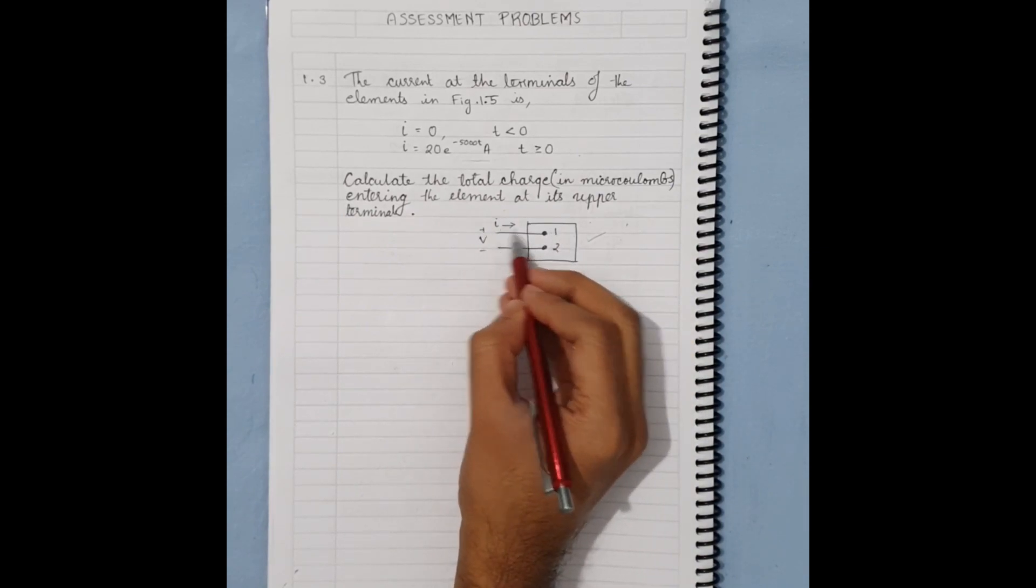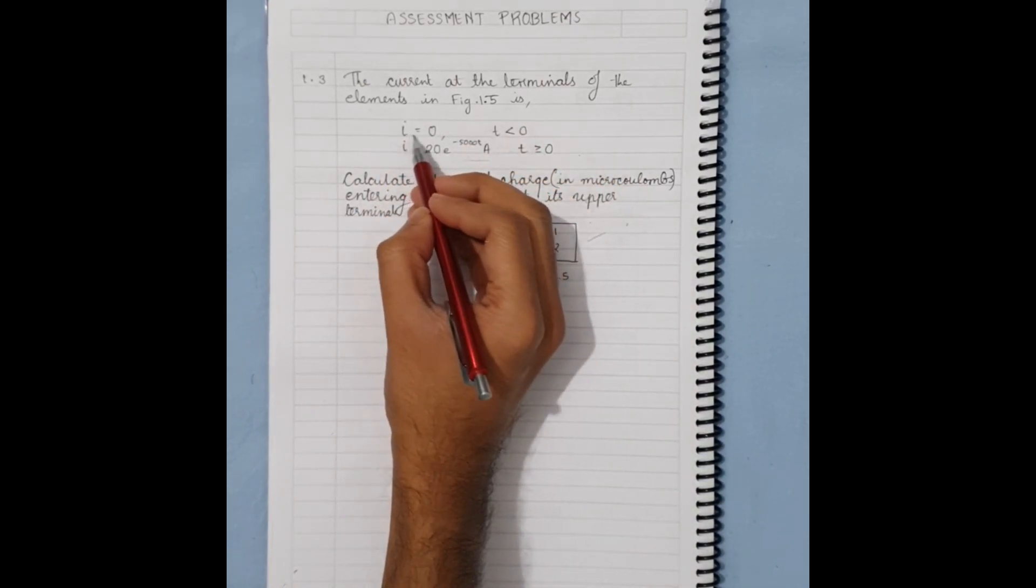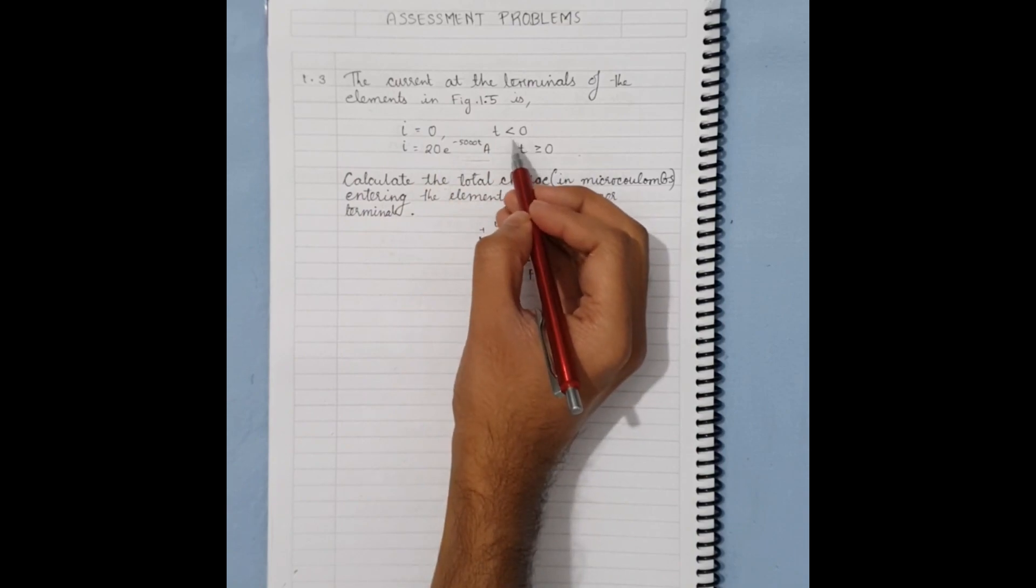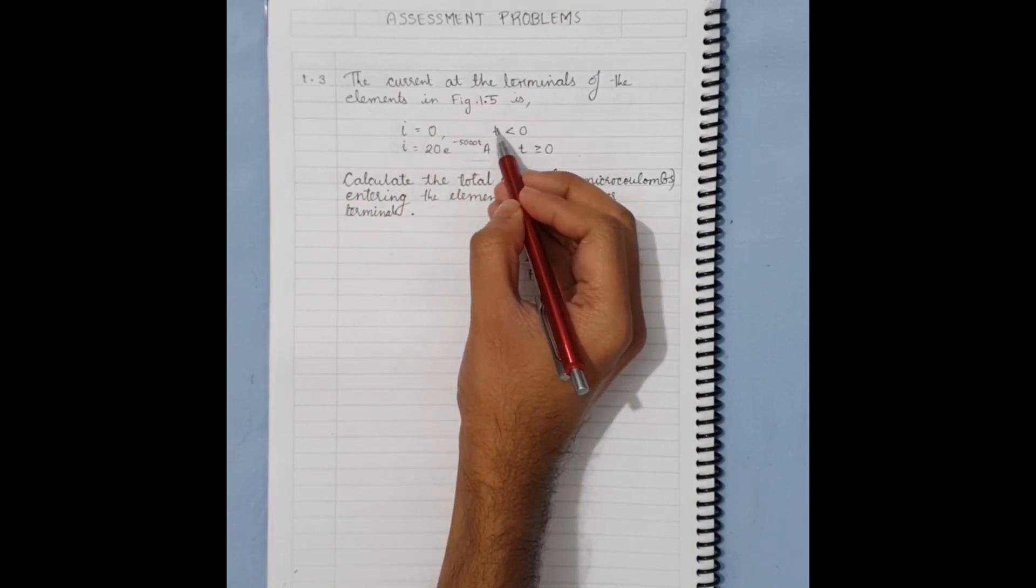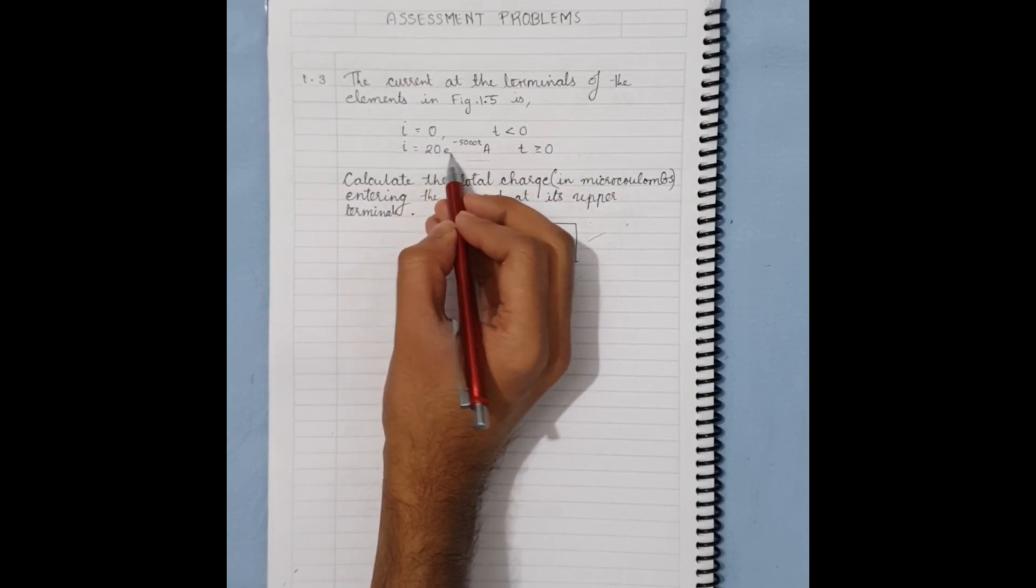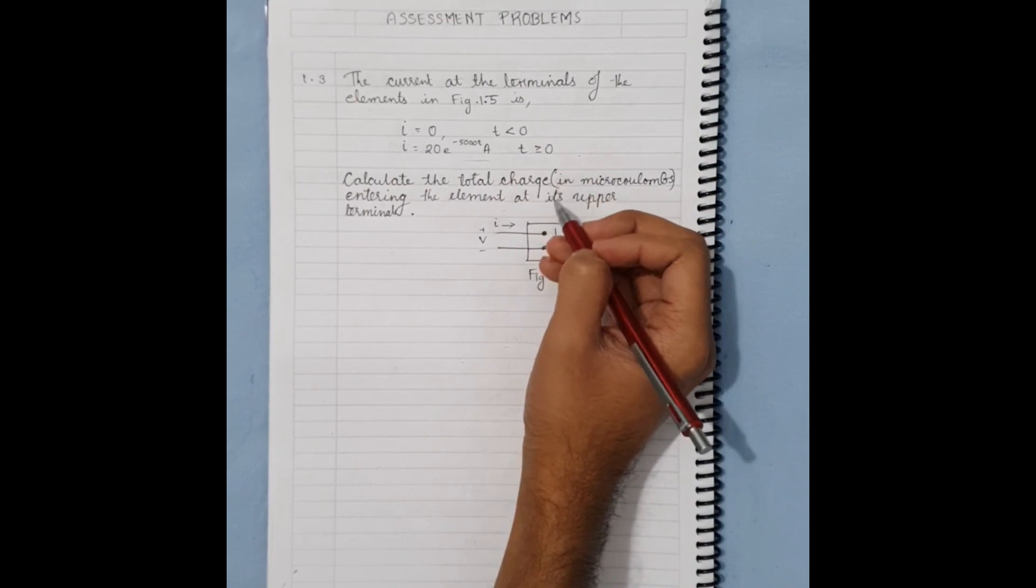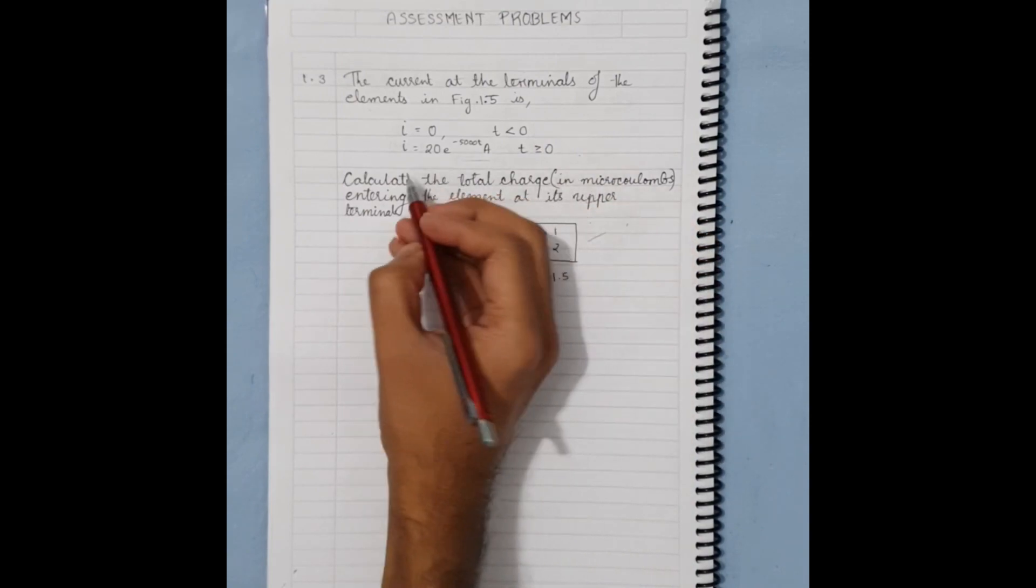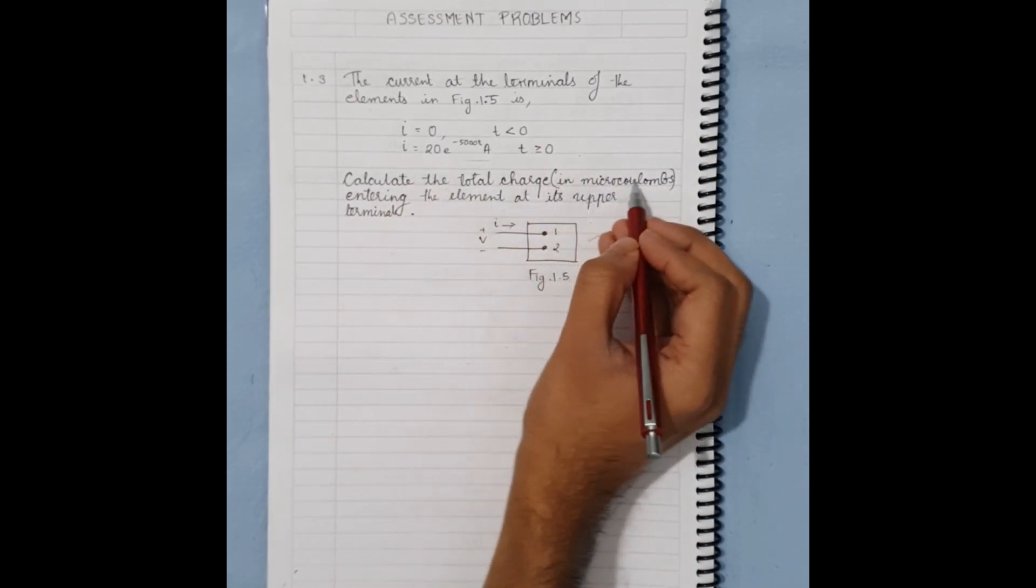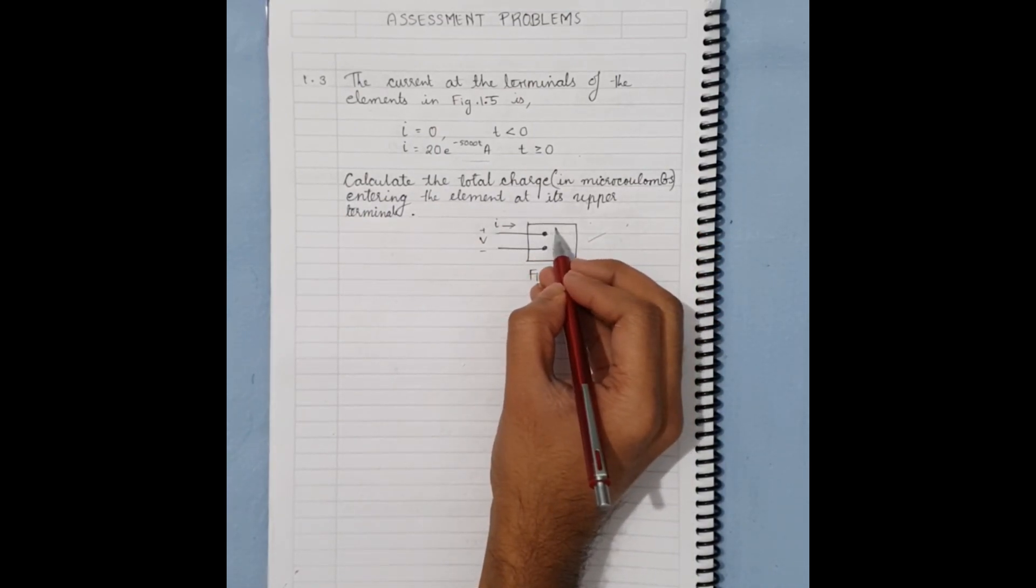The current is equal to zero when t is less than zero, and the current is 20e^(-5000t) amperes when t is greater than or equal to zero. We need to calculate the total charge in microcoulombs that is entering the element at its upper terminal.